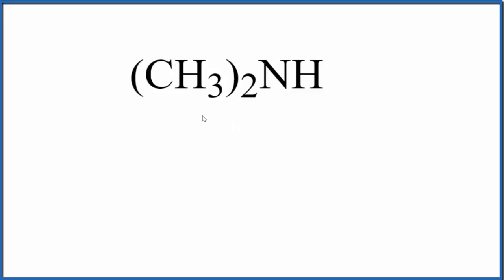If we count the valence electrons up for (CH3)2NH, we'll get this. So we have a total of 20 valence electrons.